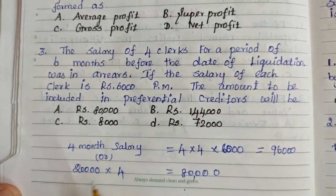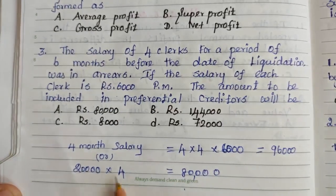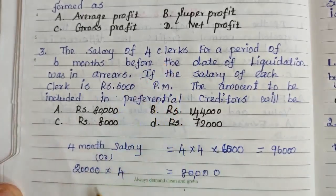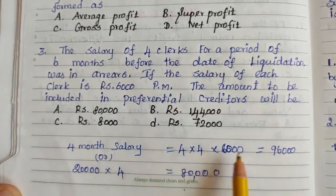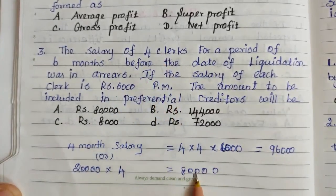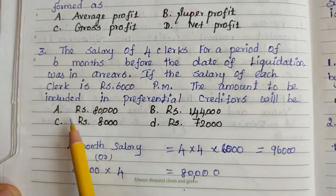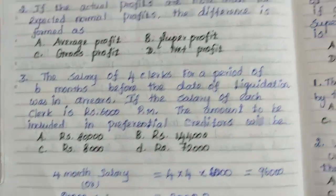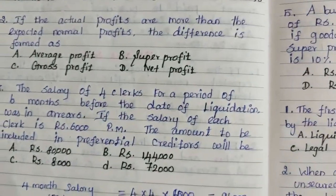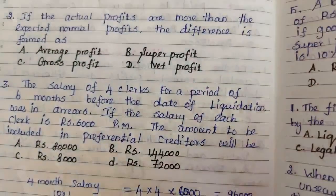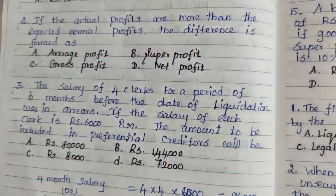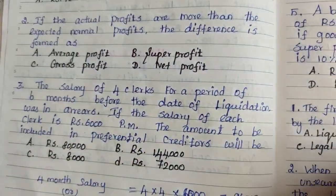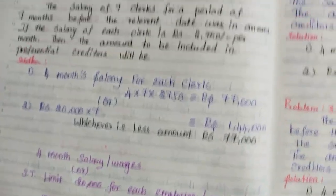4 clerks for a period of 6 months: Rs.80,000 into 4 clerks gives Rs.80,000. Whichever is less, the answer is Rs.80,000. For more detail, the calculation has already been explained in a previous video — watch that video for clarity.